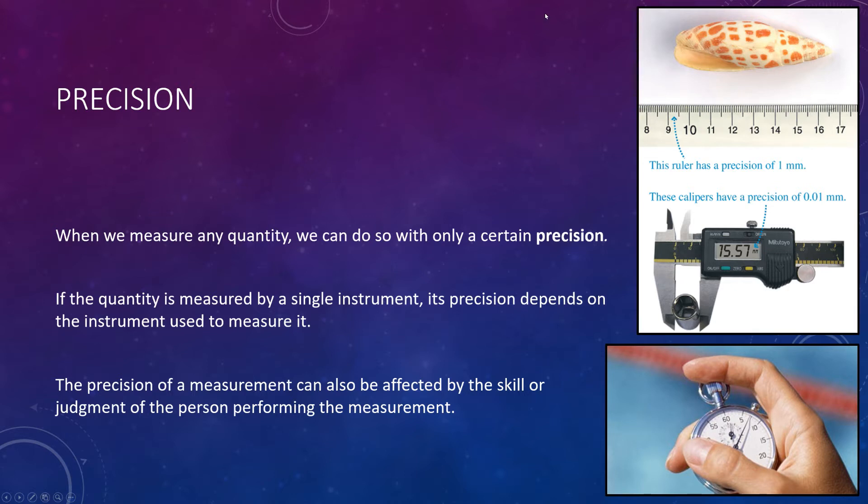However, something like a caliper can be more precise. It can maybe go down to 0.01 millimeters, so it's a factor of 100 times more precise, perhaps. And so the precision there depends on your device. Both things, a ruler and a caliper, measure length, but one is more precise than the other.